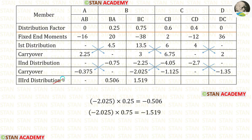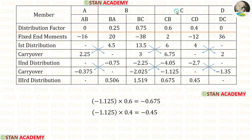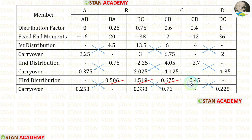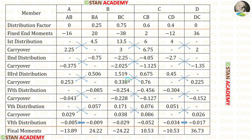For the third distribution at joint B, multiply by distribution factors — giving negative values entered as positive. At joint C, likewise negative values entered as positive. Then carry over by dividing by 2. In a similar way, continue with more distributions and carry-overs until values become very small. The process is carried through to the 6th distribution. In the last distribution, carry-over is only made to the fixed ends.